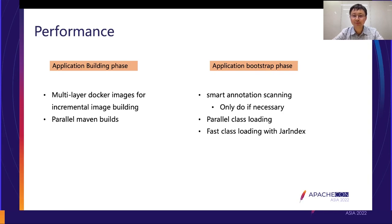We also do parallel class loading. Since Tomcat 7, Tomcat uses parallel class loading by default, which is very helpful. Another enhancement is faster class loading using a technique called jarindex — an index file for JAR files that records what packages each JAR contains.